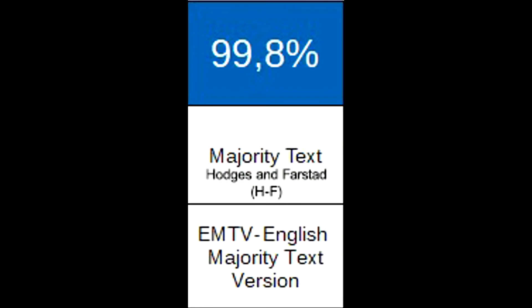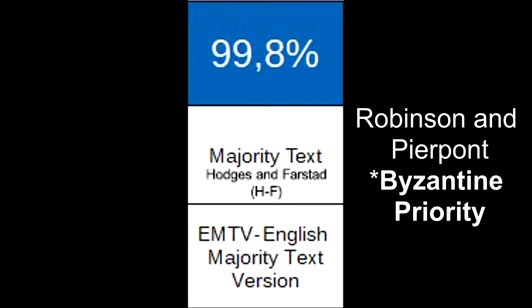At 99.8% in the graphic, we have the majority text of Hodges and Farstead and the text of Robinson-Pierpont. Those texts are not exactly the same, but they are virtually the same, so they are at the same percentage in the graphic — 99.8%. We have the English Majority Text Version, the EMTV, which used this Greek text to make its translation. So if you have a Greek text from Hodges and Farstead or Robinson-Pierpont, this text is 99.8% equal to Family 35, or 0.2% different.